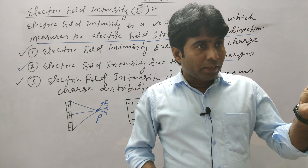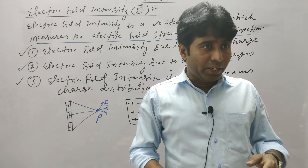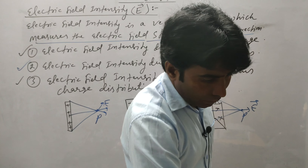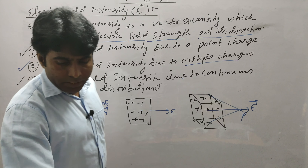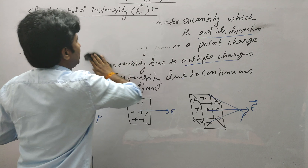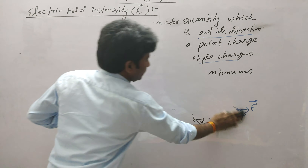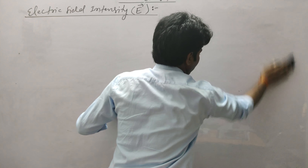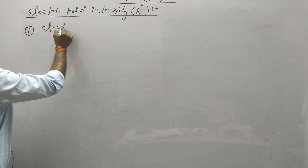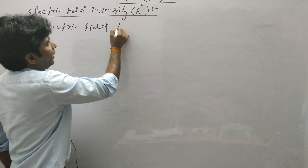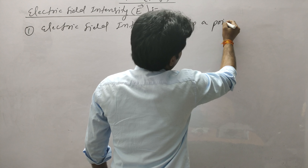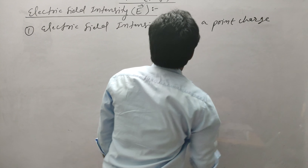Whatever we have studied in previous topics, a graph of it should remain in mind. You should read it again and again. There is no need to do anything new — just read what you have been taught repeatedly and visualize it. Now let us start the derivation of electric field intensity due to a point charge.